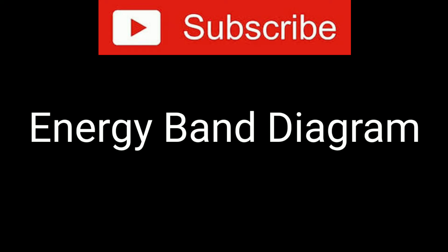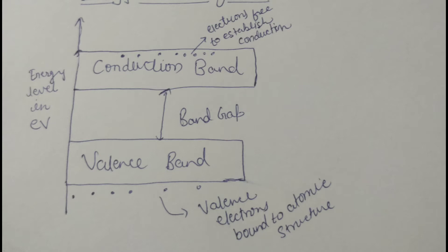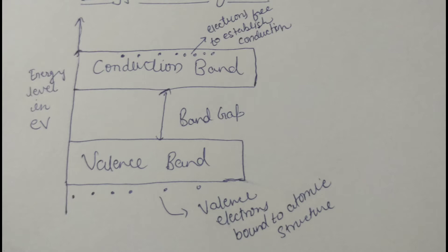Let's discuss the energy band diagram. You can see the valence band at the bottom and the conduction band above. In the valence band we have valence electrons, and in the conduction band we have free electrons. The gap between these is called the energy gap. Valence electrons have the highest energy levels of electrons still bound to their parent atoms, but additional energy is required to completely remove an electron, so free electrons have higher energy levels than valence electrons.